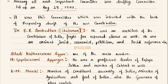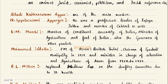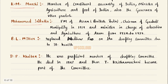Ambedkar was also an eminent jurist, economist, politician, and social reformer. The eight members were: first, Alladi Krishnaswami Iyer, one of the main members; N. Gopalaswami Ayyangar, a proficient leader of Rajya Sabha and member of the cabinet; K.M. Munshi, member of the Constituent Assembly of India, Minister of Agriculture and Food of India, and also Governor of Uttar Pradesh; and Mohammad Sadullah, Prime Minister of Assam in British India.